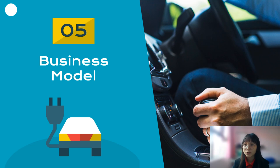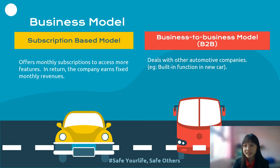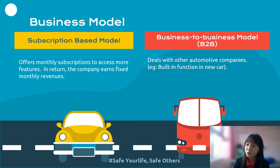Next, I am going to propose the business model of our project. The main revenue of our Safe Drive project is from the subscription-based model. This mobile app offers cheap monthly subscriptions to become a premium user to access more features. With this subscription-based model, the company can earn fixed monthly revenues. For premium users, they can call the buddy driver with just a few clicks, share real-time locations with family members, and call nearby towing services. Whereas for free users, they can only limit their mobile phone usage and collect points when the driving mode is enabled.